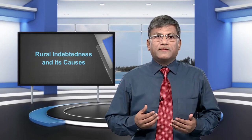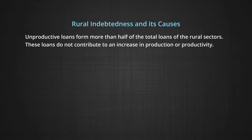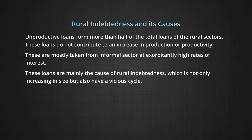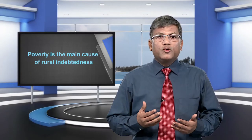Rural indebtedness and its causes: Indebtedness is the basic problem of Indian agriculture. Farmers need loans for both productive as well as other purposes. Unproductive loans form more than half of the total loans of the rural sector; these loans do not contribute to an increase in production or productivity. These are mostly taken from the informal sector at exorbitantly high rates of interest and are mainly the cause of rural indebtedness, which has a vicious cycle. Poverty is the main cause of rural indebtedness.